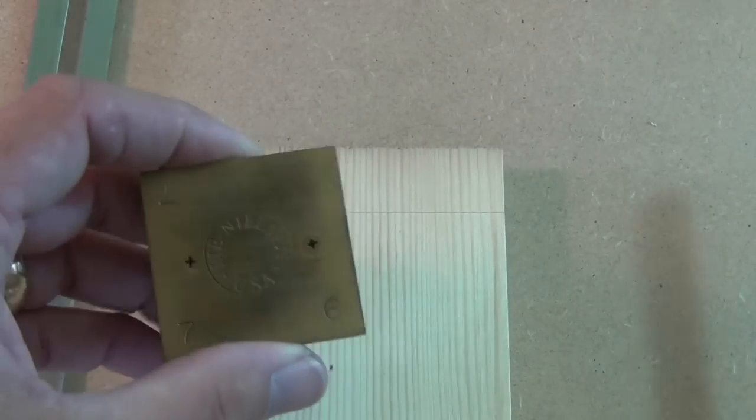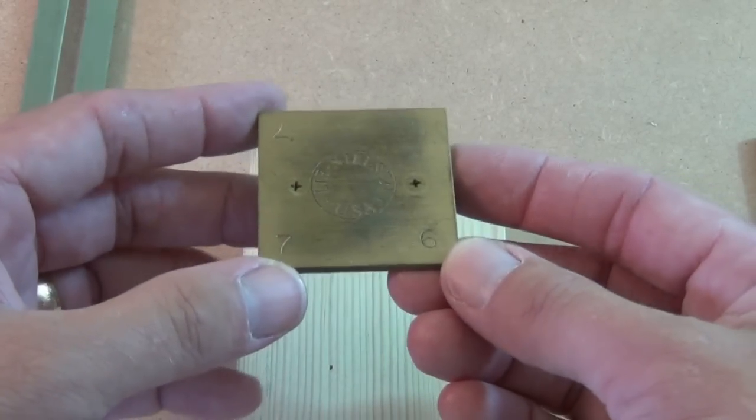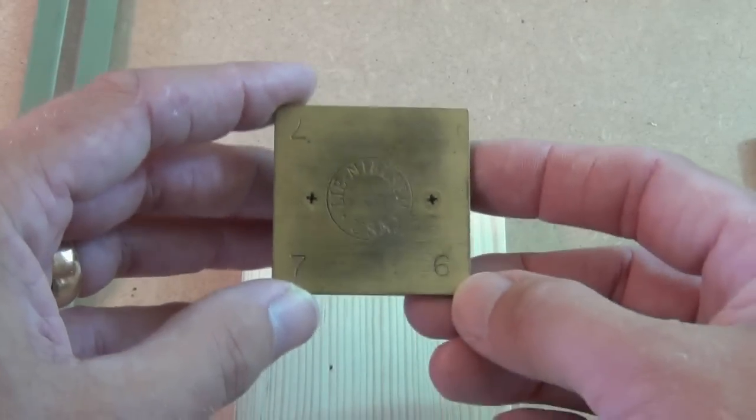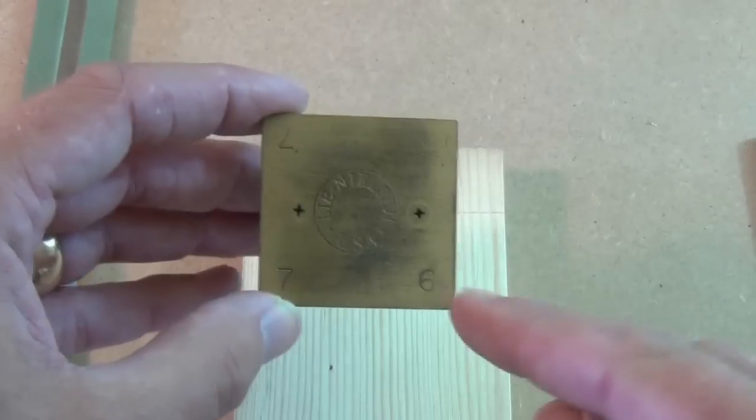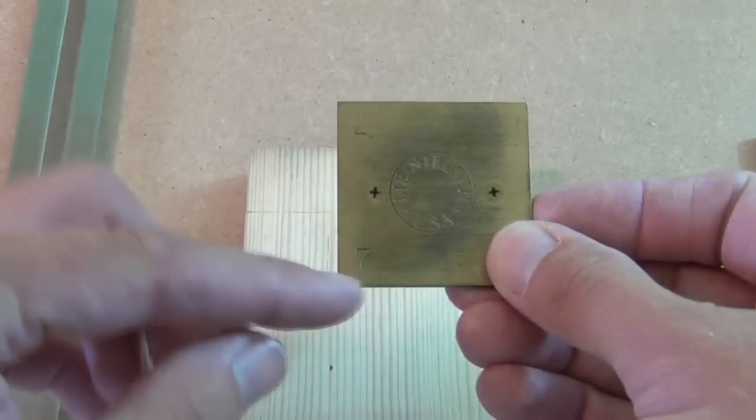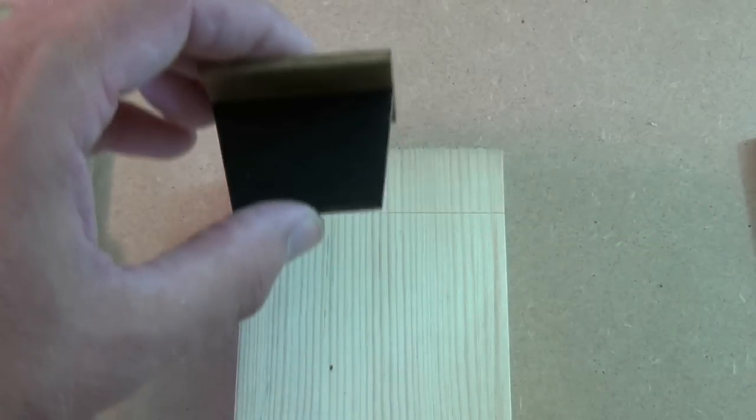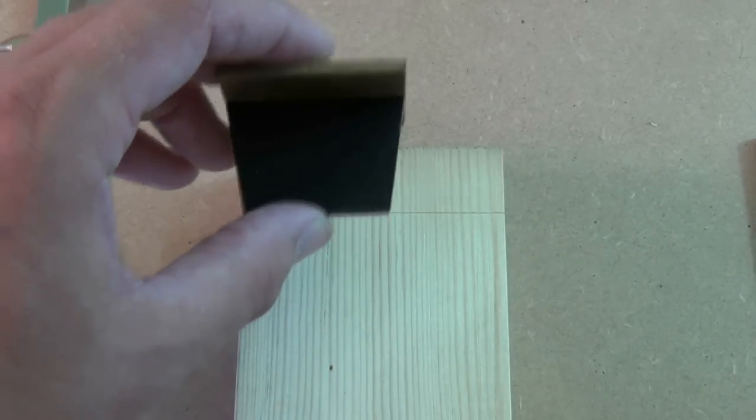If we were using the Lie-Nielsen we need to choose our angle. And this is done as a ratio here. We have on this side one in six, and on this side one in seven. So if we're working with softwood, we'll probably go for the one in six.